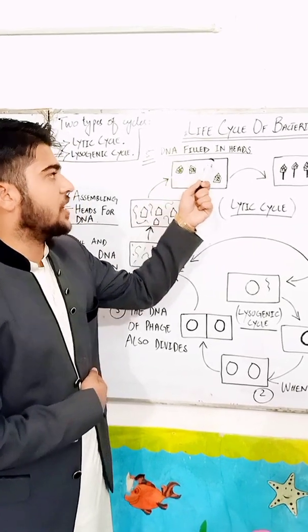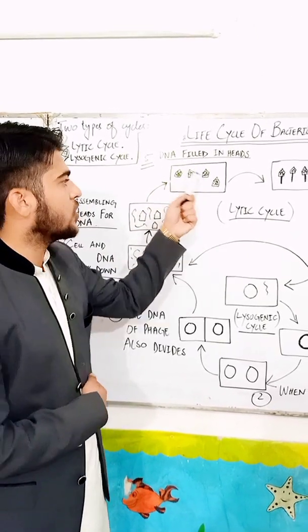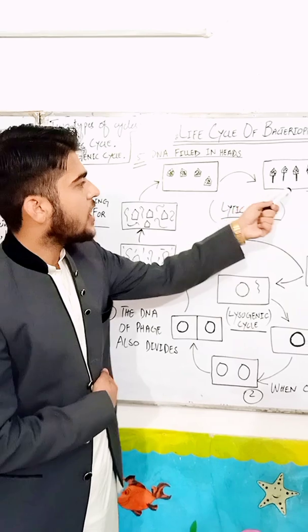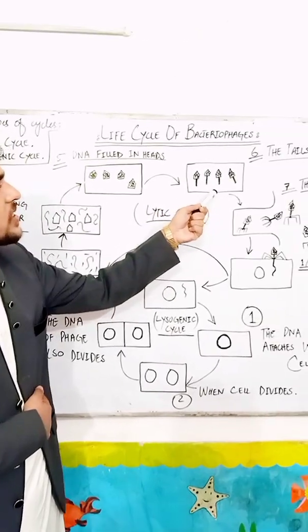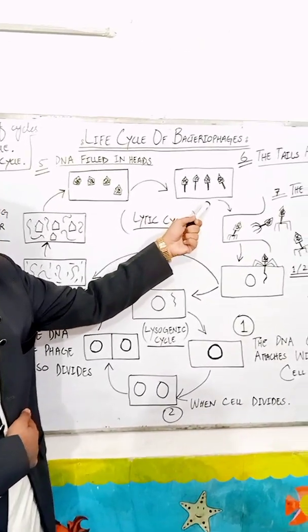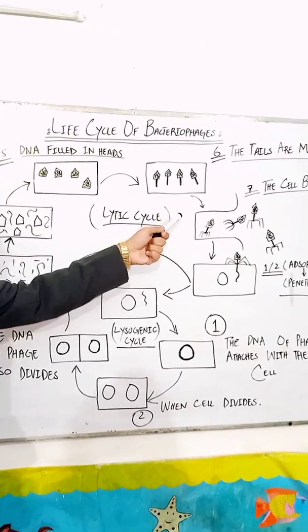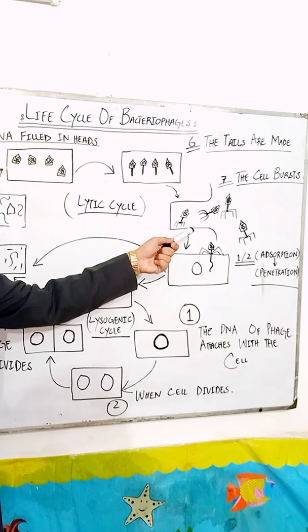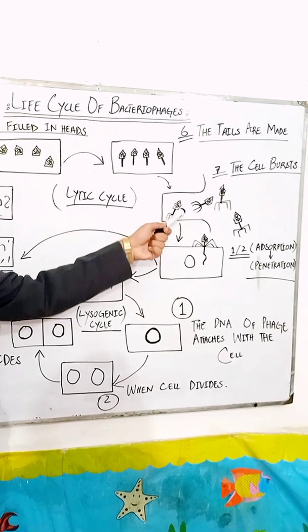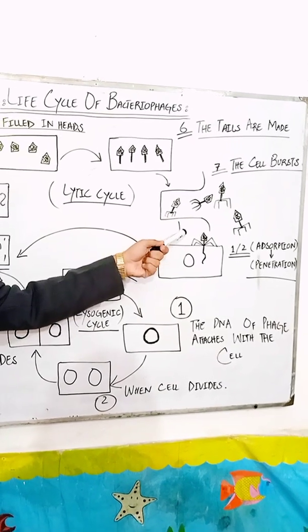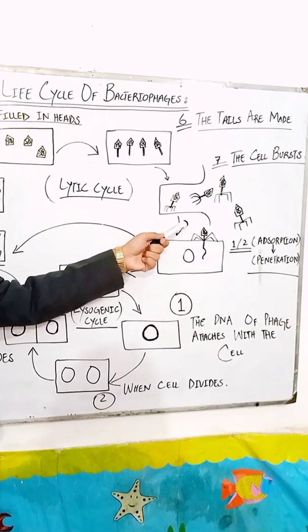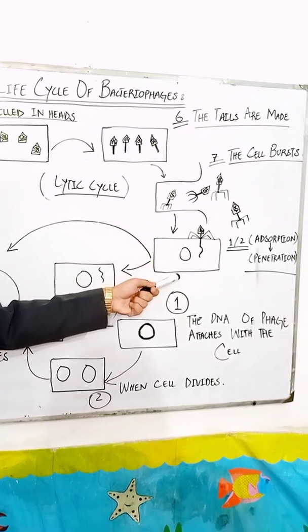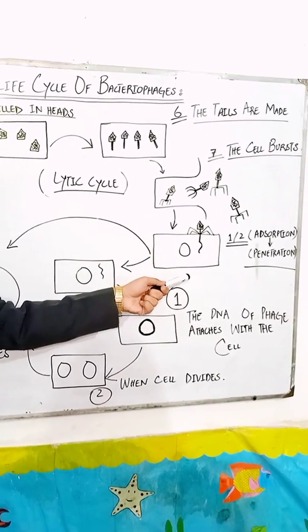In the fifth process, DNA is filled in the heads, as you can see. And in the sixth process, the tails are made. And in the seventh process, the cell bursts. As you can see, the bacteriophages are going outside to infect other cells.